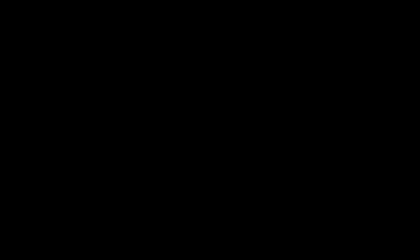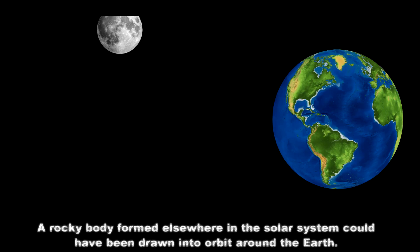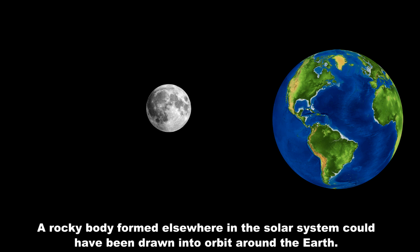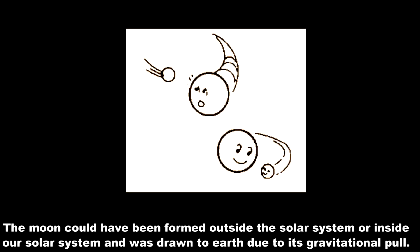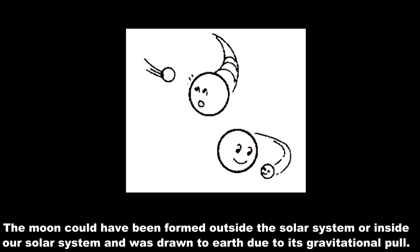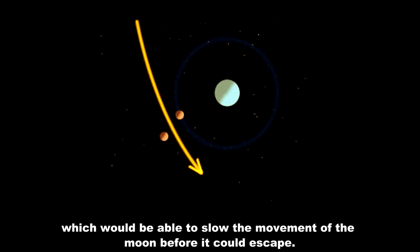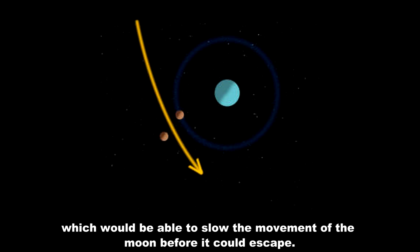The Capture Theory. A rocky body formed elsewhere in the solar system could have been drawn into orbit around the earth. The moon could have been formed outside or inside our solar system and was drawn to earth due to its gravitational pull. For this hypothesis to function, there might have been a large atmosphere extended around the primitive earth, which would be able to slow the movement of the moon before it could escape.